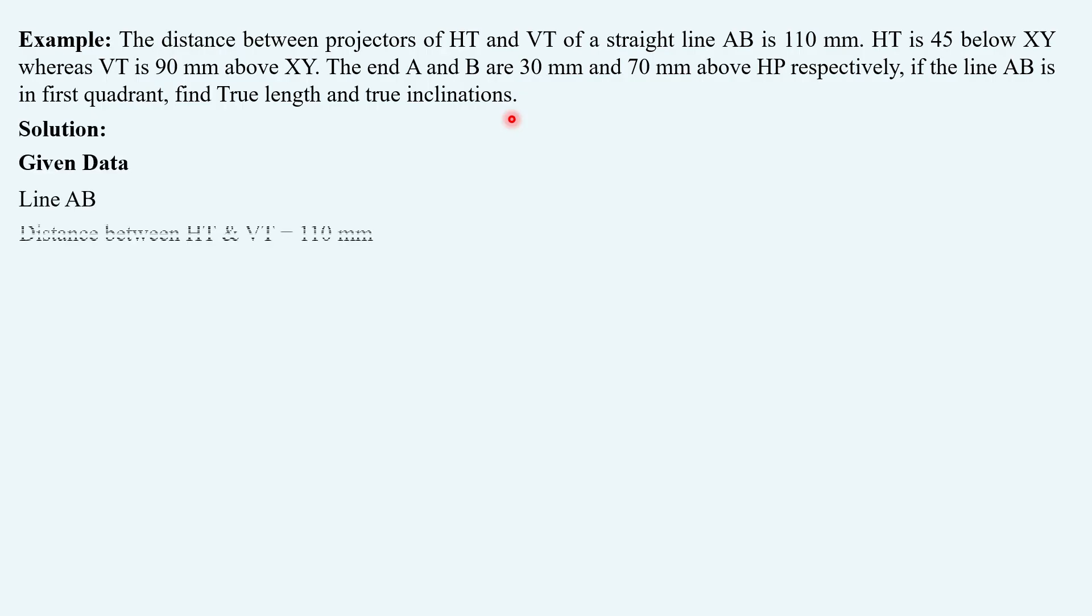Name of the line AB. Distance between HT and VT equals to 110 mm. HT is 45 mm below XY. VT is 90 mm above XY. A is 30 mm above HP and B is 70 mm above HP.